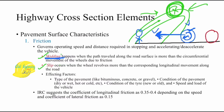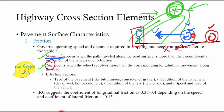In the slipping scenario, upon seeing an obstruction the brakes are applied, but after application of the brakes the tire keeps revolving while the vehicle does not move forward. Slipping is defined as when the wheel revolves more than the corresponding longitudinal movement along the road — the tire revolves in its own position but there is no longitudinal movement of the vehicle.